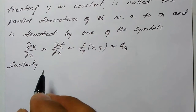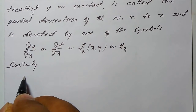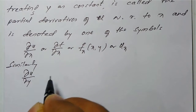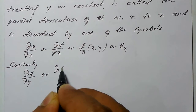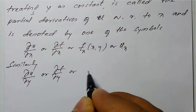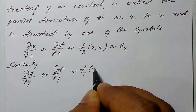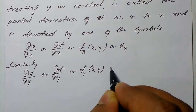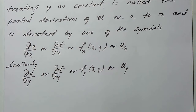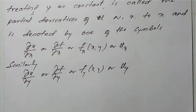Similarly, if I want to differentiate with respect to y, I write it as ∂u/∂y, or ∂f/∂y, or f_y of (x, y), or simply u_y. These are the notations for partial derivatives with respect to x as well as with respect to y.